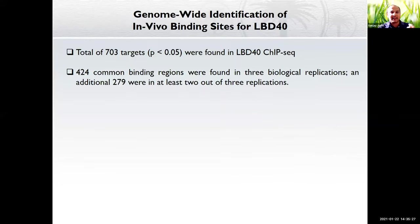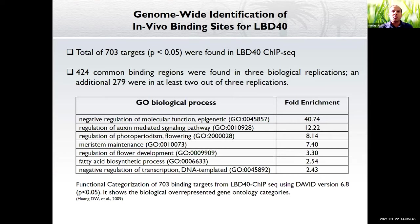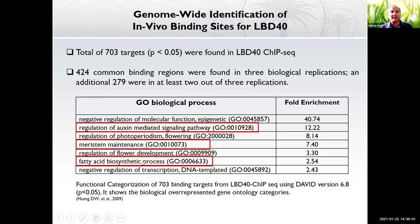From sequencing, we found a total of 703 different targets where LBD40 binds. Among those, 424 were seen in three replications and an additional 279 were found in at least two out of three replications. We then categorized these genes using gene ontology analysis and found important biological functions like auxin-mediated signaling pathway, meristem maintenance, and fatty acid biosynthesis — all shown in literature to be involved in embryogenesis.